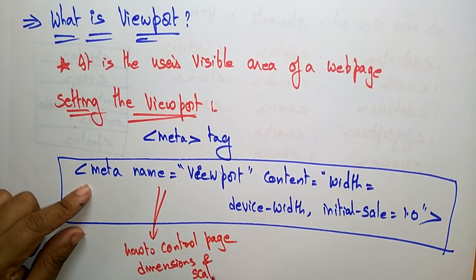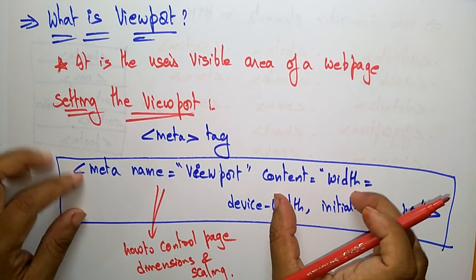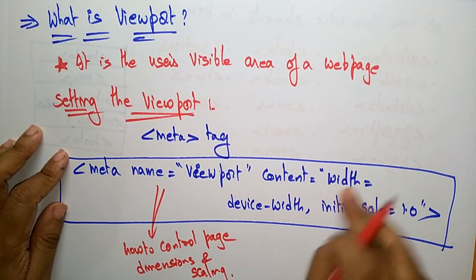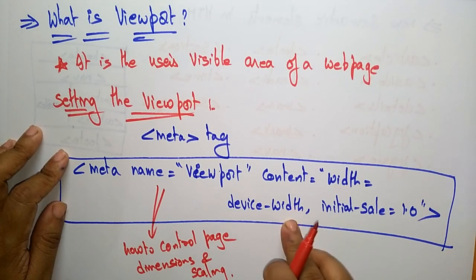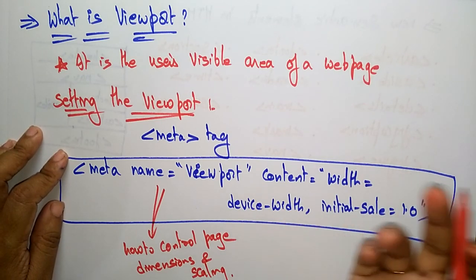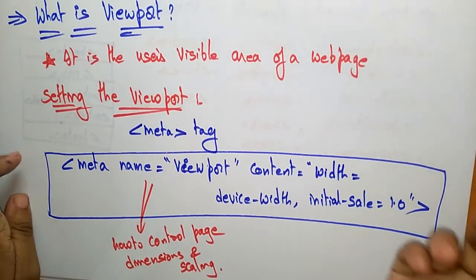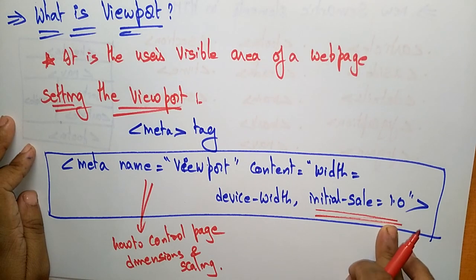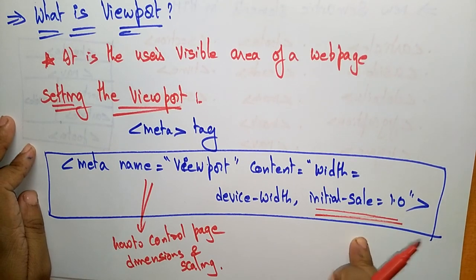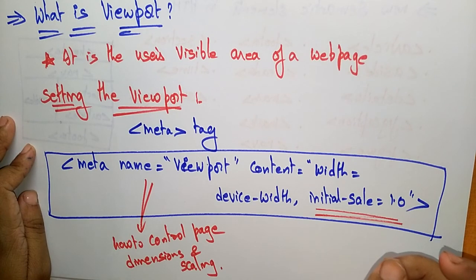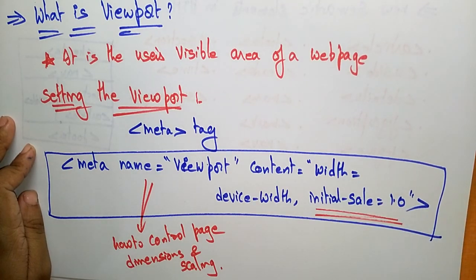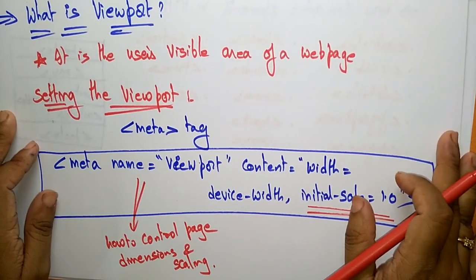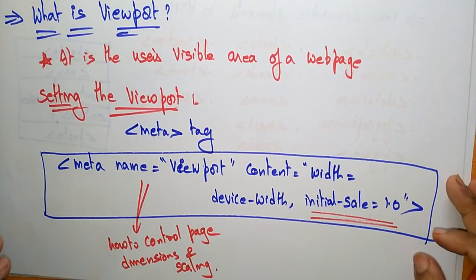Regarding the content attribute: width equals device-width sets the width of the page depending on the device, so whatever device you are using, it sets the width accordingly. And initial-scale equals 1.0 sets the initial zoom level when the page is first loaded by the browser — it sets the zoom level of the page when it opens for the first time. This is about the viewport.